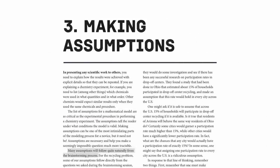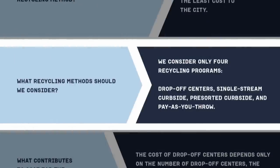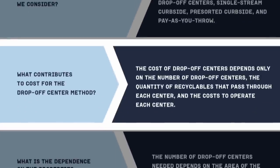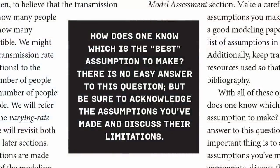Once the question is defined, assumptions need to be made in order to begin building the model. For example, when modeling the spread of a disease, you might assume the disease spreads at a constant rate versus some variable rate. When trying to find the ideal recycling method for a city, you might assume only a certain percentage of people will participate in drop-off recycling. Sometimes these assumptions are based on prior studies or available data, and sometimes they are simply reasonable assumptions in the absence of data.